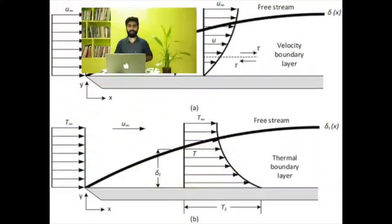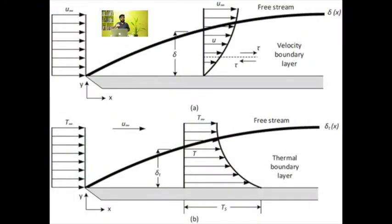It is because of viscosity, and this condition is known as the no-slip condition or Maxwell's no-slip condition. But the upper layer of fluid is flowing with a velocity, so there is a velocity gradient. The region where velocity gradient exists is known as the hydrodynamic boundary layer, and the region where temperature gradient exists is known as the thermal boundary layer.